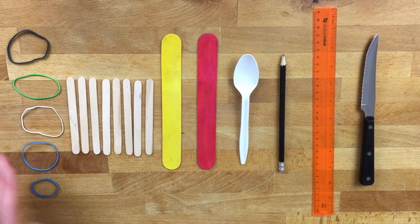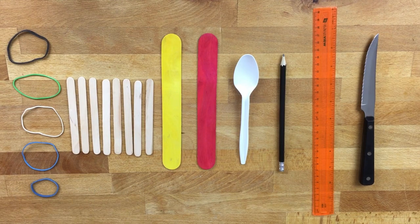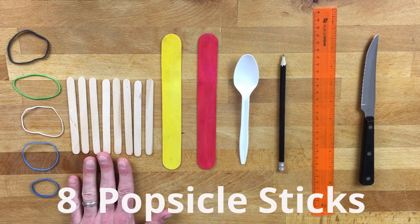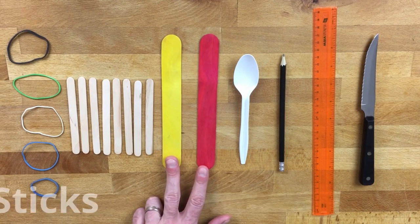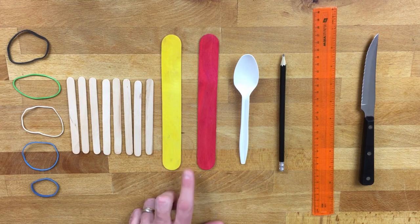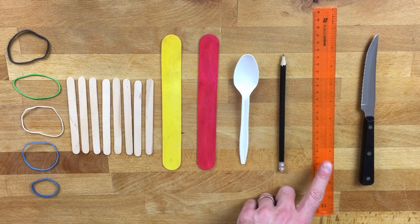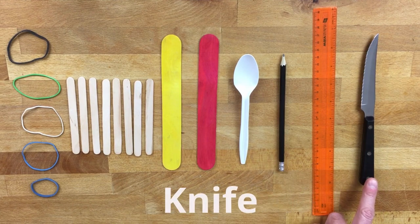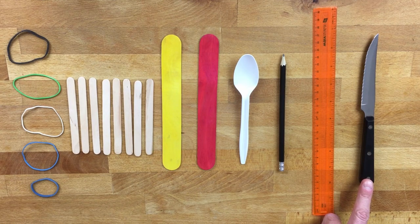For this activity, you're going to need five elastic bands, one of which is smaller than the others, and I'll tell you why later. You'll need eight regular-sized popsicle sticks, two larger popsicle sticks, which are also called craft sticks. They can be found at craft stores, art supply stores, or even sometimes the dollar store. A plastic spoon, a pencil, a ruler, and a knife with a serrated edge. Now, the fact that we're using a knife means that you need to have an adult with you.